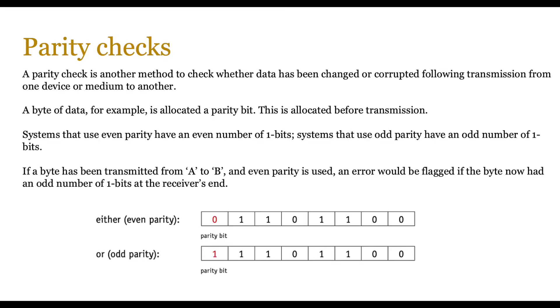Now, another method to check if data is not corrupted or changed following transmission is parity check. A byte of data is allocated a parity bit, and this is allocated before transmission.